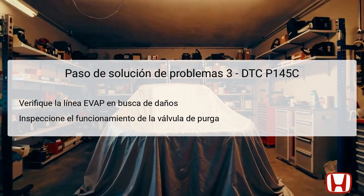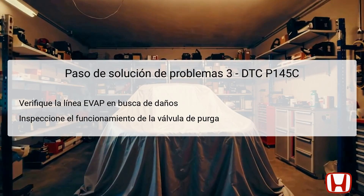The next phase in the troubleshooting process involves a thorough inspection of the EVAP lines and the purge valve. Start by visually checking all lines for any signs of damage, such as cracks or blockages that might impede vapor flow. These lines are essential for the transfer of vapors from the canister to the engine, and any defects could lead to a malfunction, triggering DTC P145C. Following this, inspect the operation of the purge valve, ensuring it opens and closes appropriately when activated. A stuck-closed valve can hinder proper vapor flow. Verifying these components' integrity is crucial in identifying and resolving the issue affecting the EVAP system.